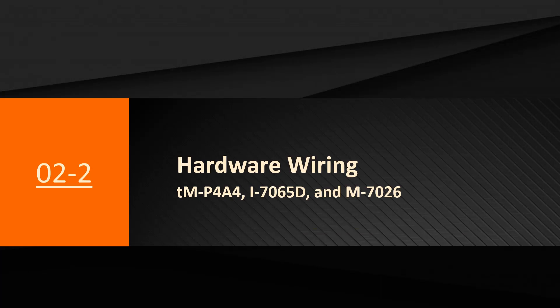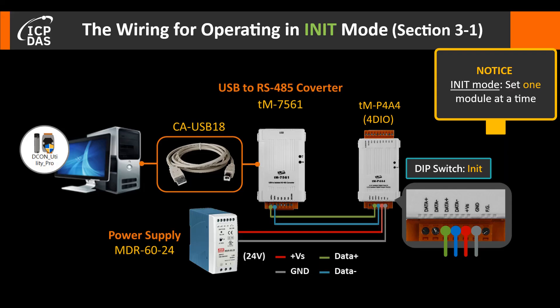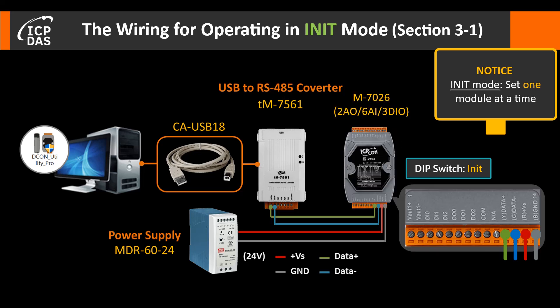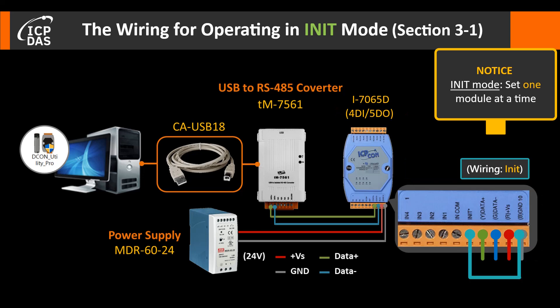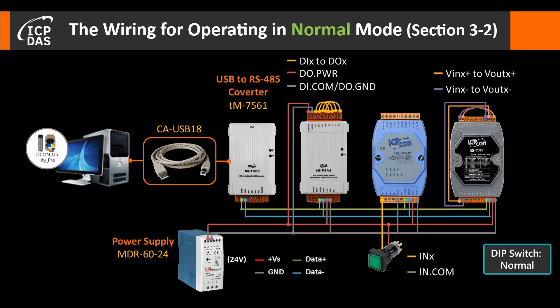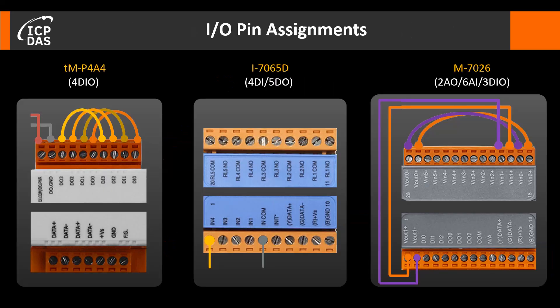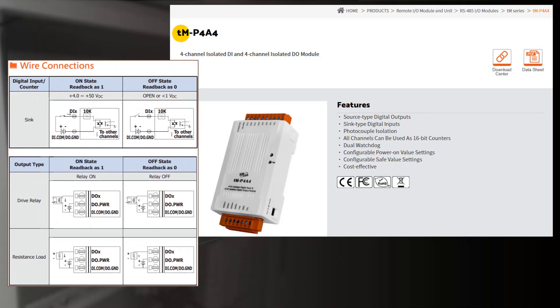Hardware wiring: the wiring for setting TMP4A4, the wiring for setting M7026, the wiring for setting I7065, and the wiring for configuring IO modules in normal mode. These pin assignments are for your reference. Wire connections and pin assignments are found in the data sheet on the product page.